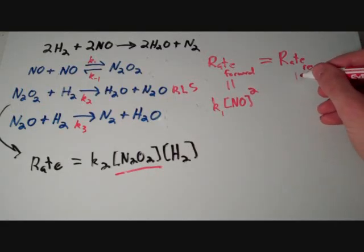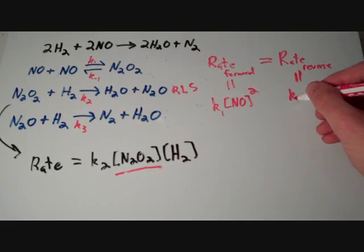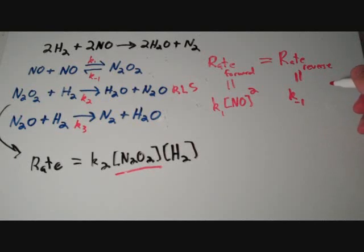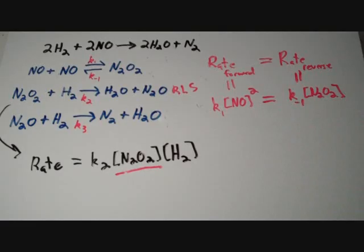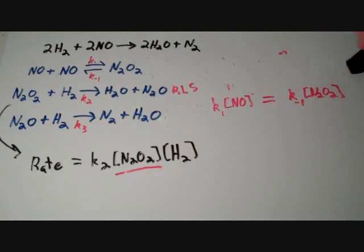And the rate of the reverse reaction, we can express that in a similar fashion by saying that this is equal to K minus 1 times the concentration of N2O2. These two quantities are, in fact, equal to each other. Didn't mean to erase that exponent. Here we go. There it is.